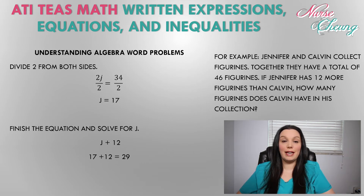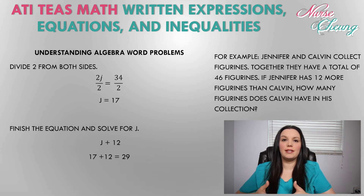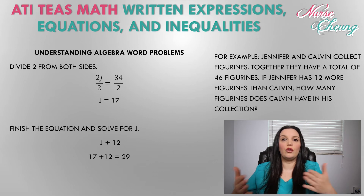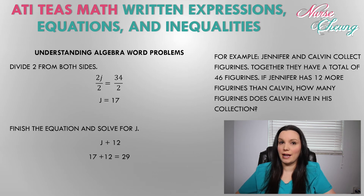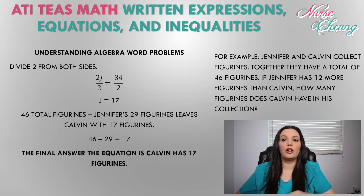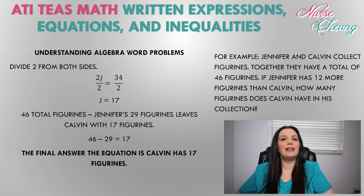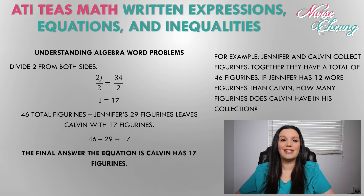J equals 17. However, we know that Jennifer has 12 more figurines than Calvin does, so 17 plus 12 equals 29 — Jennifer has a total of 29 figurines. But we're concerned about what Calvin has, so we subtract 29 from 46, which leaves Calvin with 17 figurines. Calvin has 17 figurines while Jennifer has 29.